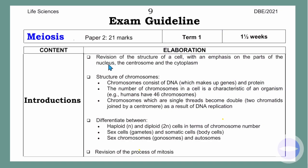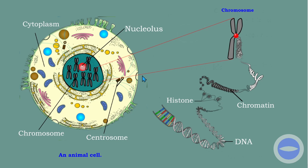Number one is revision of the structure of a cell, with an emphasis on the parts of the nucleus, the centrosome, and the cytoplasm. In this chapter, we need to know — remember in Grade 10 we studied about an animal cell. We will be focusing on the cytoplasm, which is a fluid inside the cell that gives the cell its shape.